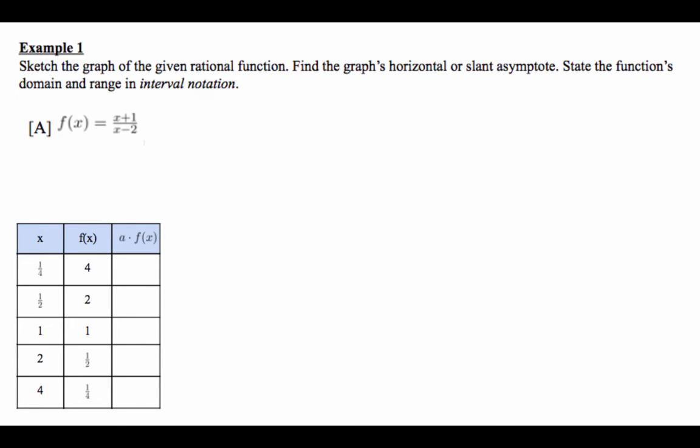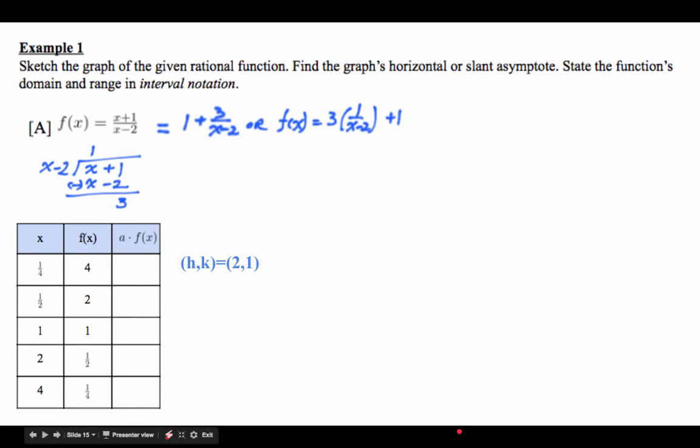It says sketch the given rational function. Find the graph's horizontal or slant asymptote. State the function's domain and range in interval notation in this case. Well, whenever we've seen this picture like that, we have done a long division. That's always a good idea. So let's do that. And that is equal to this. That is a quotient plus the remainder divided by a divisor. And if you change it around a little bit to the form that we're familiar with, it's 3 times 1 over x minus 2 plus 1. So what's my h,k? If you said 2,1, you're correct. And then we need to sort of move on.